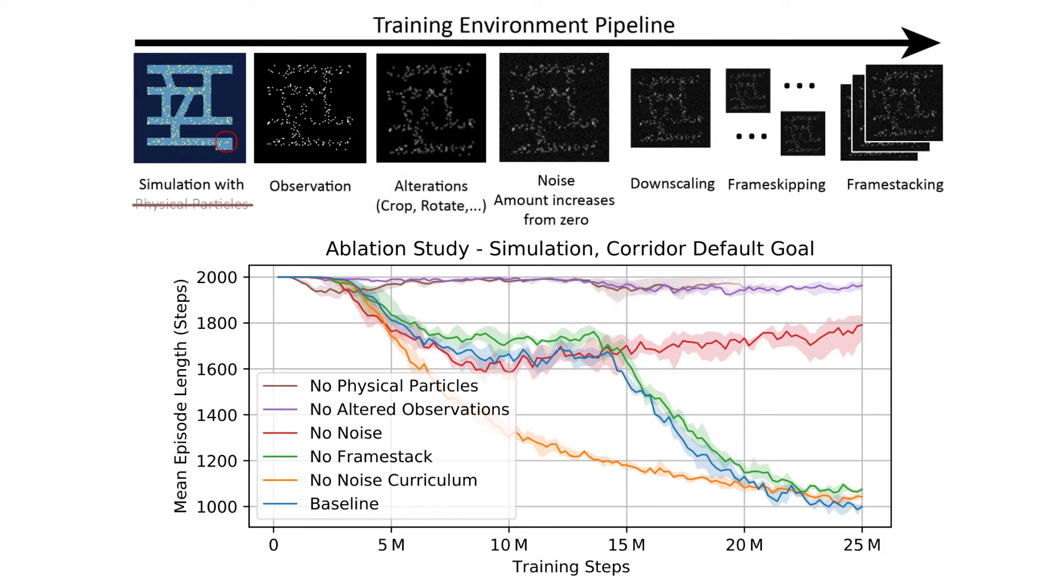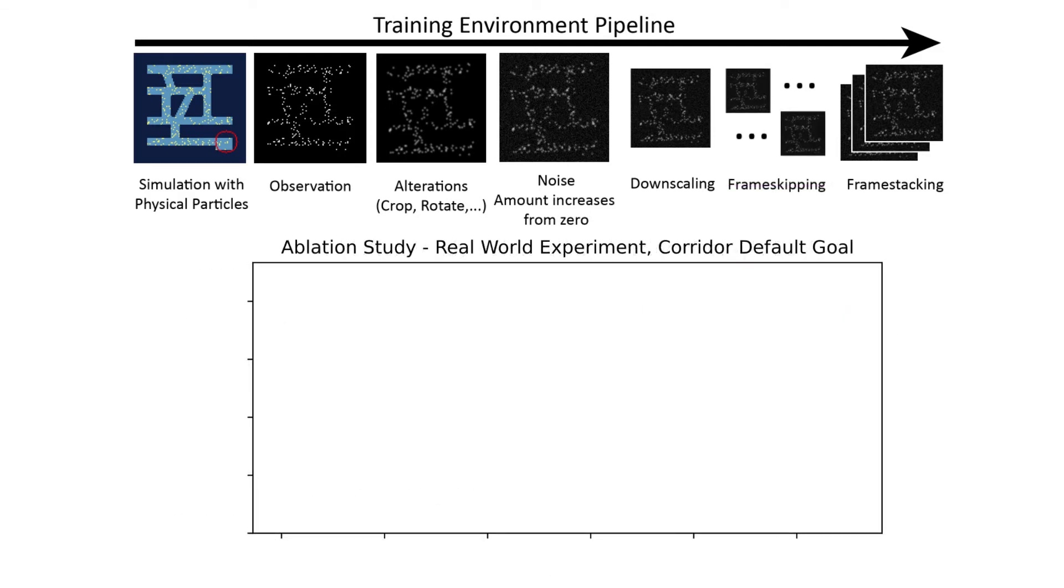If we train using particles without a physical model, performance is poor. Finally, our particle simulation uses more frames per second than the hardware system. An agent trained with a high frame rate performs poorly with less frames per second.